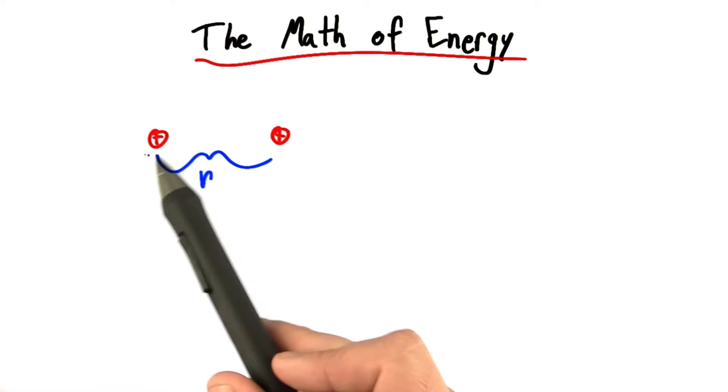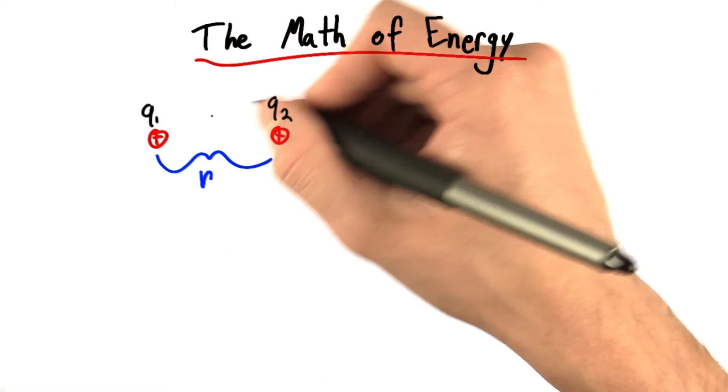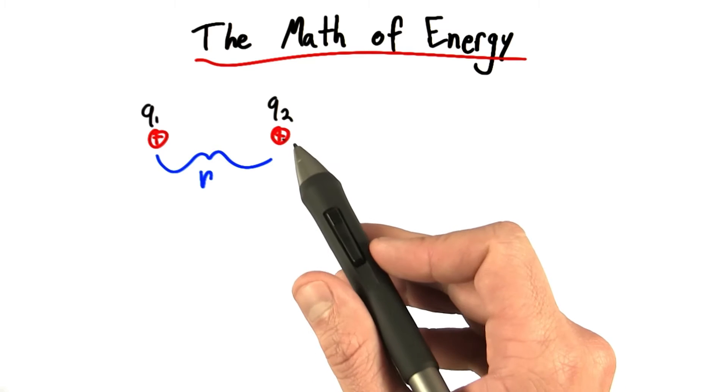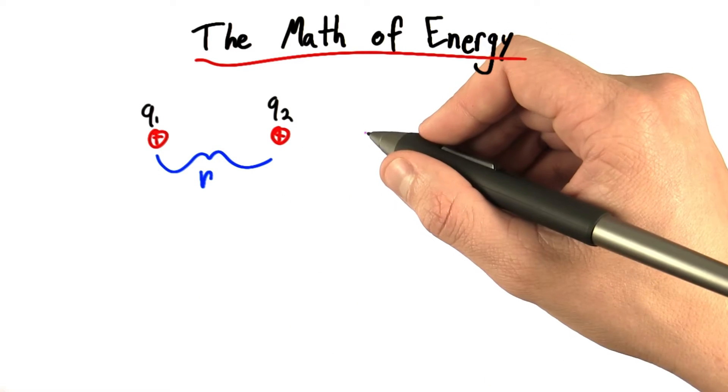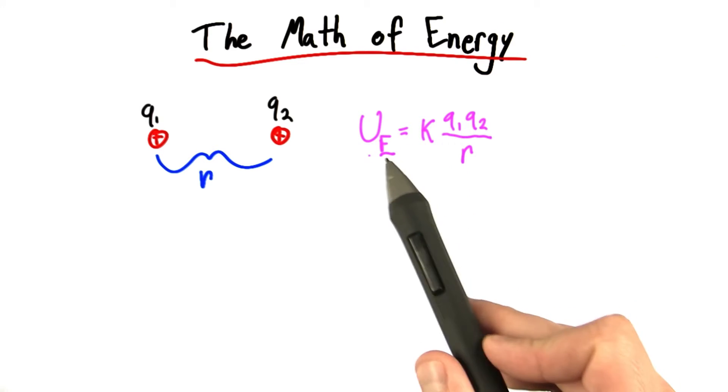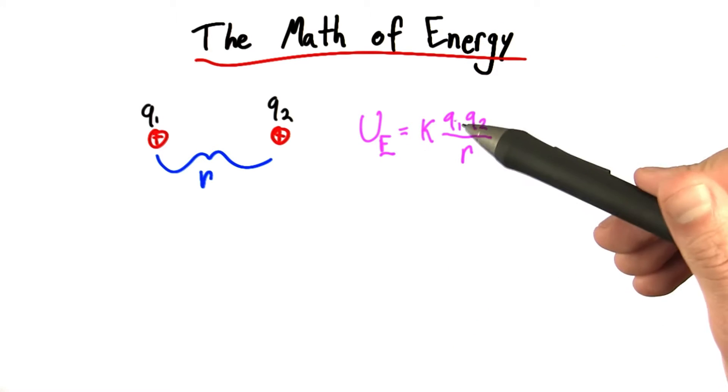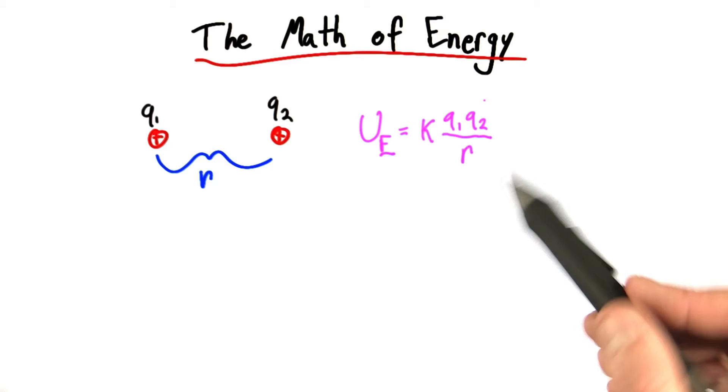Looking back at our universe where there's only two positive charges, I'll call them q1 and q2. In this case they're both positive, but they could be negative or one of each. It turns out that the electric potential energy is equal to some constant k times q1 times q2 over r.